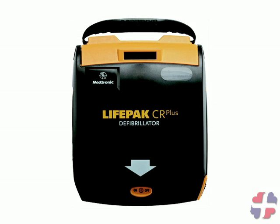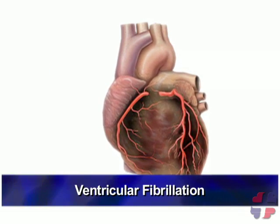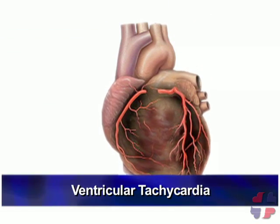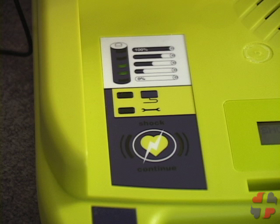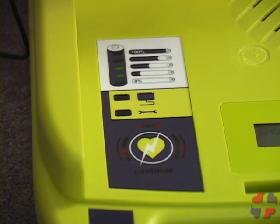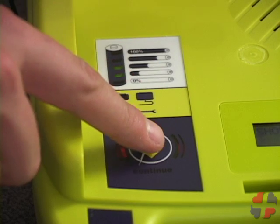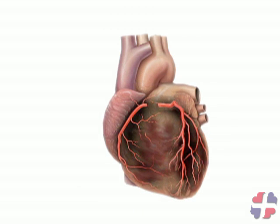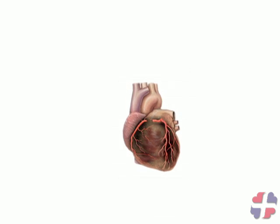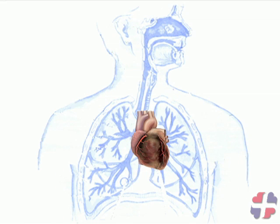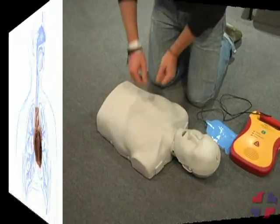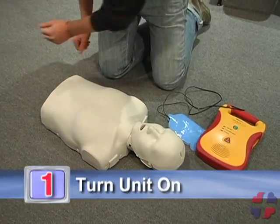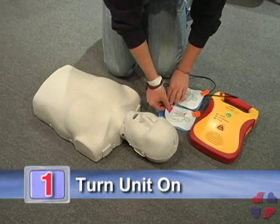An AED is used to detect the absence or presence of a shockable heart rhythm. If either ventricular fibrillation or ventricular tachycardia is detected, the AED will advise the user by voice prompt to deliver the shock. When a shock is delivered, it will temporarily stop all electrical activity in the heart. This momentary break allows the electrical impulses to reset, restoring a natural heart rhythm and normal blood circulation.